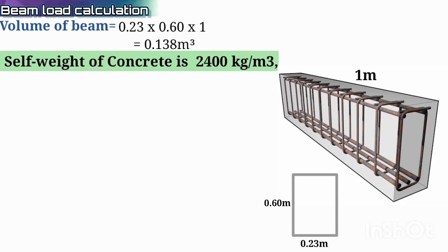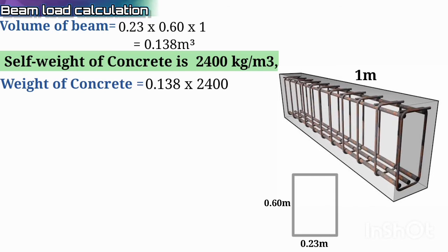Remember that the self-weight of concrete is 2400 kg per cubic meter. Now we have to determine the weight of the concrete. The weight of the concrete is the volume multiplied by the self-weight of concrete, so 0.138 × 2400, which equals 333 kg. So 333 kg of concrete is used in this beam.